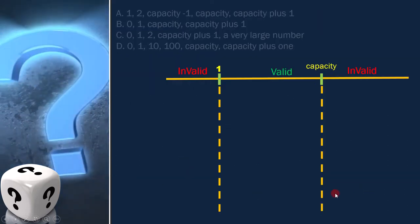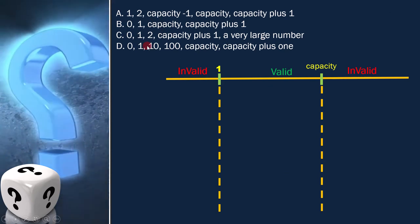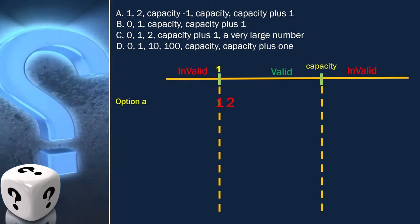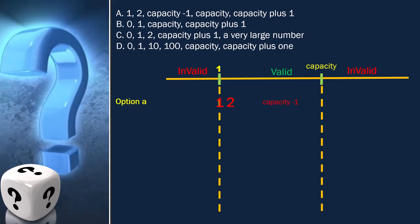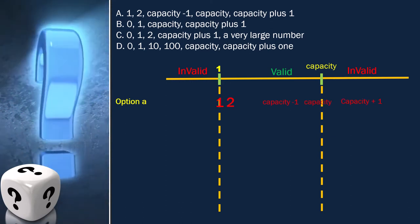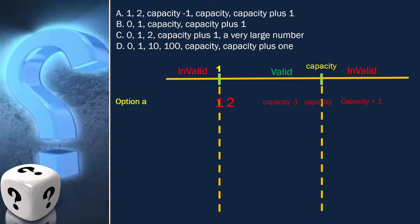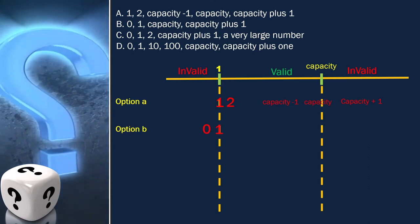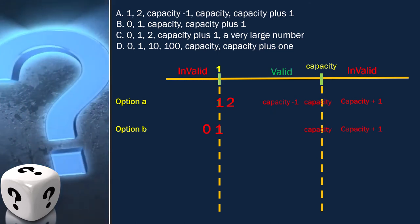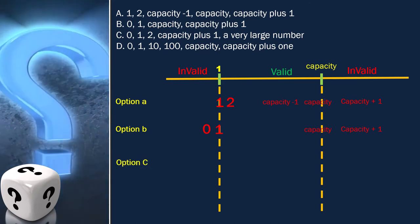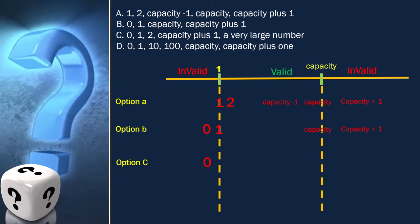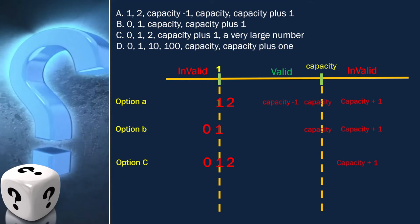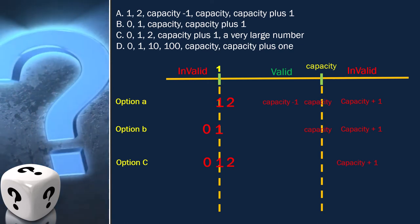Now let's analyze each of the options to get the correct answer. Option A is 1, 2, capacity minus 1, capacity, capacity plus 1. Option B is 0, 1, capacity, capacity plus 1. Option C is 0, 1, 2, capacity plus 1, a very large number.